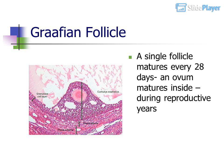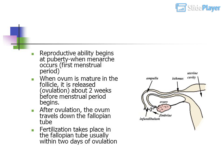A single follicle matures every 28 days and an ovum matures inside during reproductive years. Reproductive ability begins at puberty when menarche occurs — the first menstrual period. When the ovum is mature in the follicle, it is released — this is called ovulation, about two weeks before the menstrual period begins.